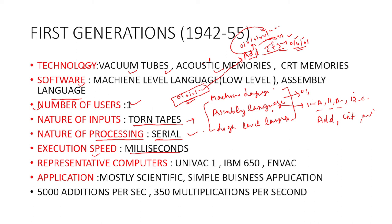The assembler converts assembly language to machine language. The computer cannot understand assembly language because it only understands machine language. So the assembler converts assembly language into machine language, and also converts machine language back to assembly language, which we can understand.